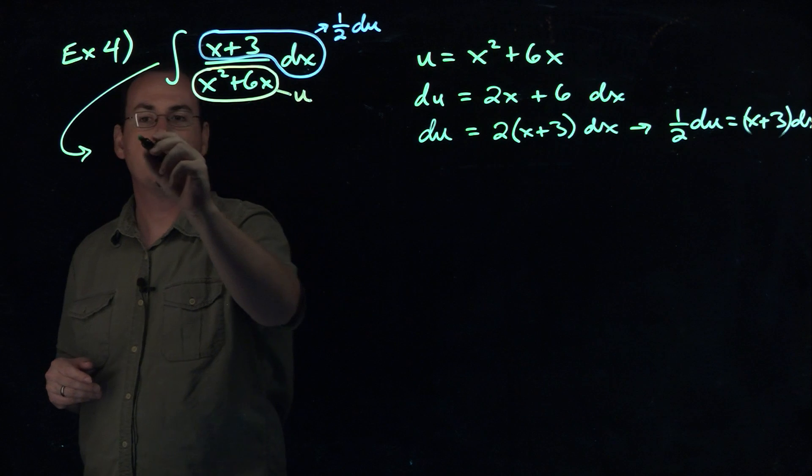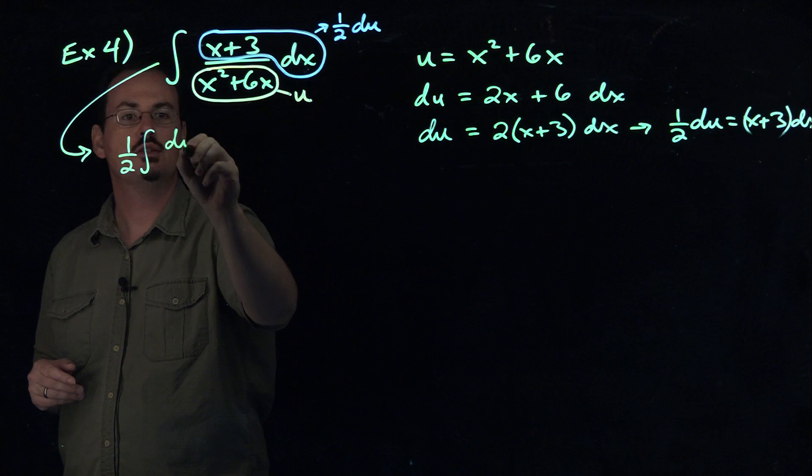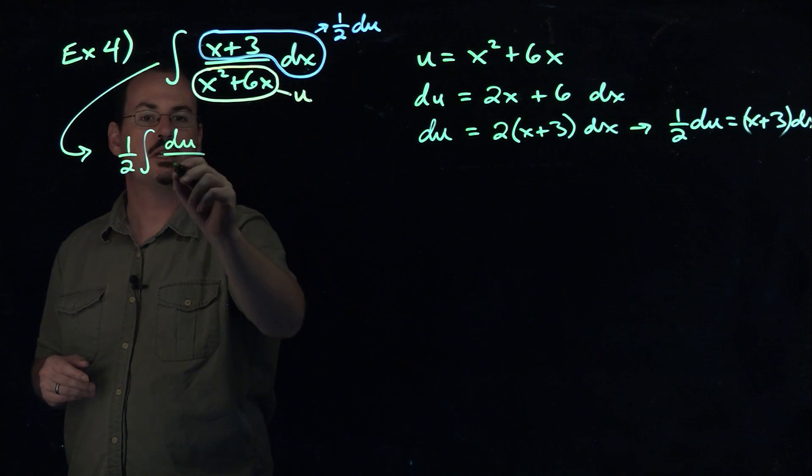And so what we'll see, I'll put the 1/2 in front. So we get 1/2. The du is all that's left there, and that's in the numerator. And then what do we see in the denominator, u.